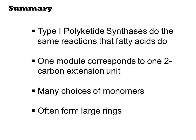Type 1 polyketide synthases do the same reactions that fatty acid synthases do. They just don't necessarily do all of them, resulting in a diversity of oxidation states at each 2-carbon unit. Each module of the synthase corresponds to the elongation by one 2-carbon unit from a malonyl-CoA molecule. The modules are not reused or cycled through by the substrate. There are many choices of monomers for both the initiating acid and the extending malonates. The mechanisms of termination are also diverse and can result in large rings by intramolecular transthioesterification reactions.